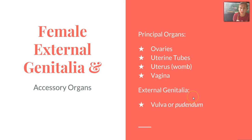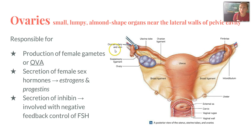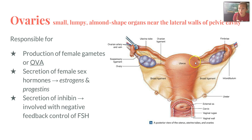Now, Section 19-3 covers the female system. The principal organs involved are the ovaries, uterine tubes, the uterus or womb, and the vagina, while the external genitalia includes the vulva. The ovaries are small, lumpy, almond-shaped organs near the lateral walls of the pelvic cavity, responsible for production of female gametes or ova. They also secrete female sex hormones including estrogens and progestins, and secrete inhibin, which is involved with negative feedback control of FSH. The uterine tubes help pass oocytes into the uterus.